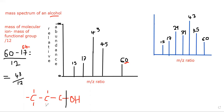So 43 is CH3-CH2-CH2, that is your propyl group. Adding the OH brings it up to 60. So for a compound that is not a hydrocarbon, subtract the mass of the functional group from the total mass. Treat the answer like you would calculate a fragment formula — divide by 12 and ignore the decimal. So 43 divided by 12 gives three carbons attached to the OH group.